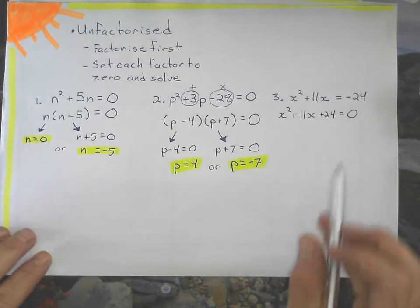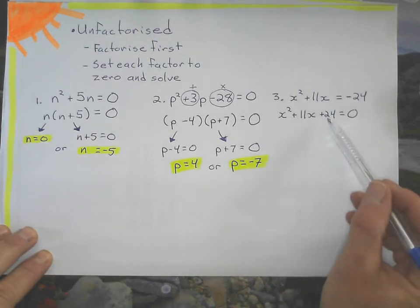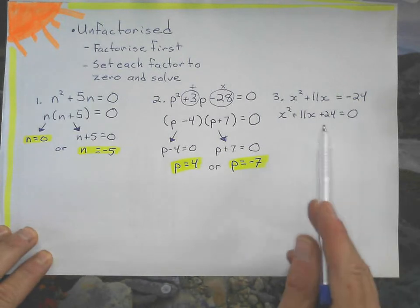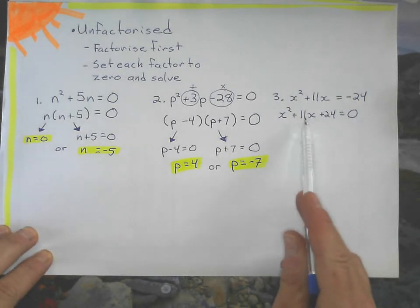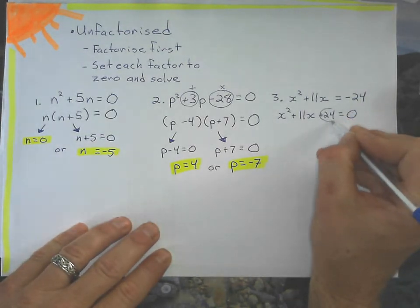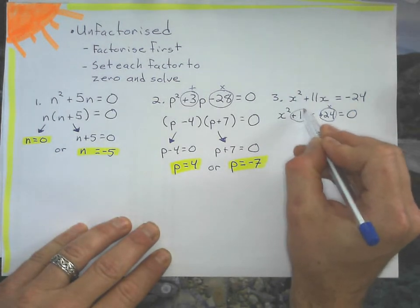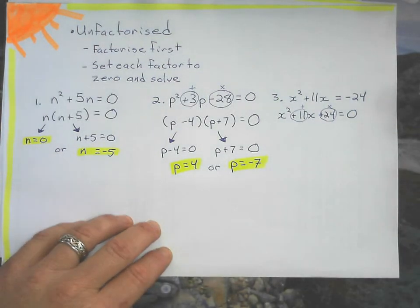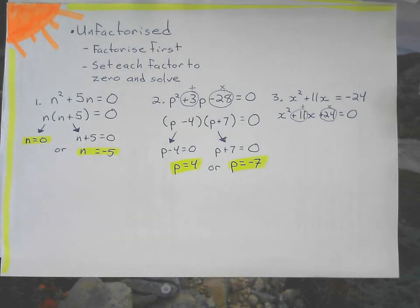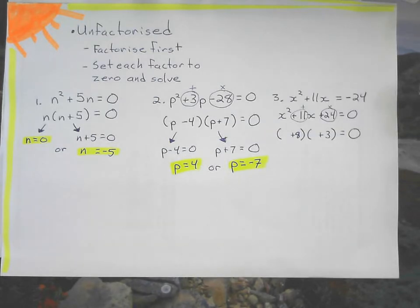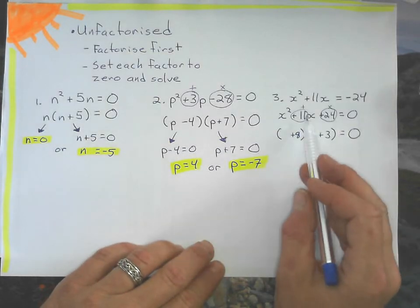That's what it looks like when I set it to zero. Negative 24 becomes positive 24 on the other side. I go to factorize it, and I look at which two numbers multiply to get 24 and add to get positive 11. Those two numbers are 8 and 3.